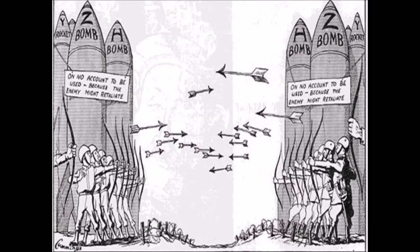You can see on each side there is a multitude of bombs — Y bomb, Z bomb, Y rocket, and H bomb — and hanging over those bombs it says 'On no account to be used because the enemy might retaliate.' Both sides have the same thing, and basically this represents the conflict between the United States and the Soviet Union during the period we call the Cold War, which lasted from the end of World War II around 1945 until the early 1990s, about 1991, when the Soviet Union dissolved.